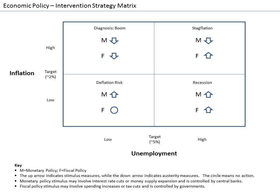Monetarism was particularly influential in the early 1980s. Monetarism fell out of favor when central banks found it difficult to target money supply instead of interest rates as monetarists recommended. Monetarism also became politically unpopular when the central banks created recessions in order to slow inflation.